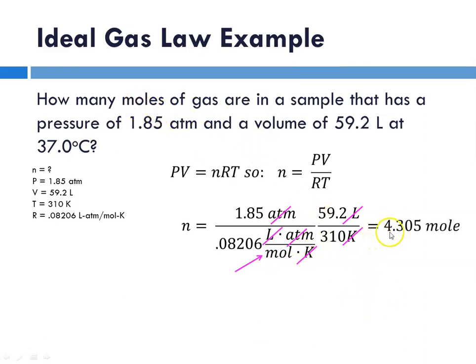When you plug that into your calculator, 1.85 times 59.2 divided by 0.08206 divided by 310, you get 4.305 moles. Looking up here we see 3 sig figs, 3 sig figs, and 3 sig figs. So we've got to round to 3 sig figs, which is the 0. The number immediately following it is a 5. 5 and above, we give it a shove. So our answer for n is 4.31 moles. We had to round up.